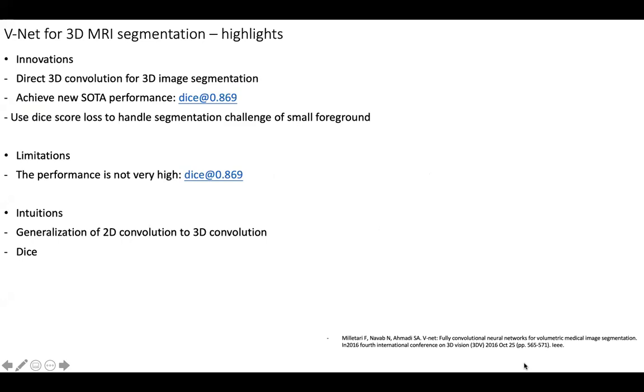Here's an overview of this paper. For the innovations, I think there are three key points. The first is this paper generalizes the 2D convolution to 3D convolution and applies this 3D convolution for 3D image segmentation directly. It also achieves state-of-the-art performance with a dice score of 0.869.